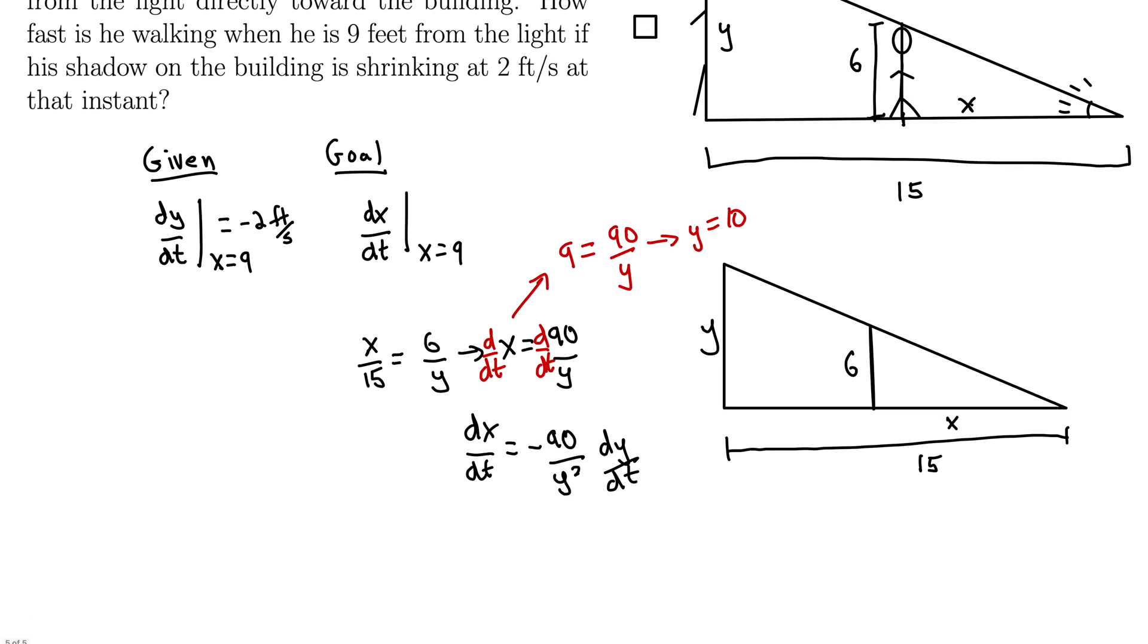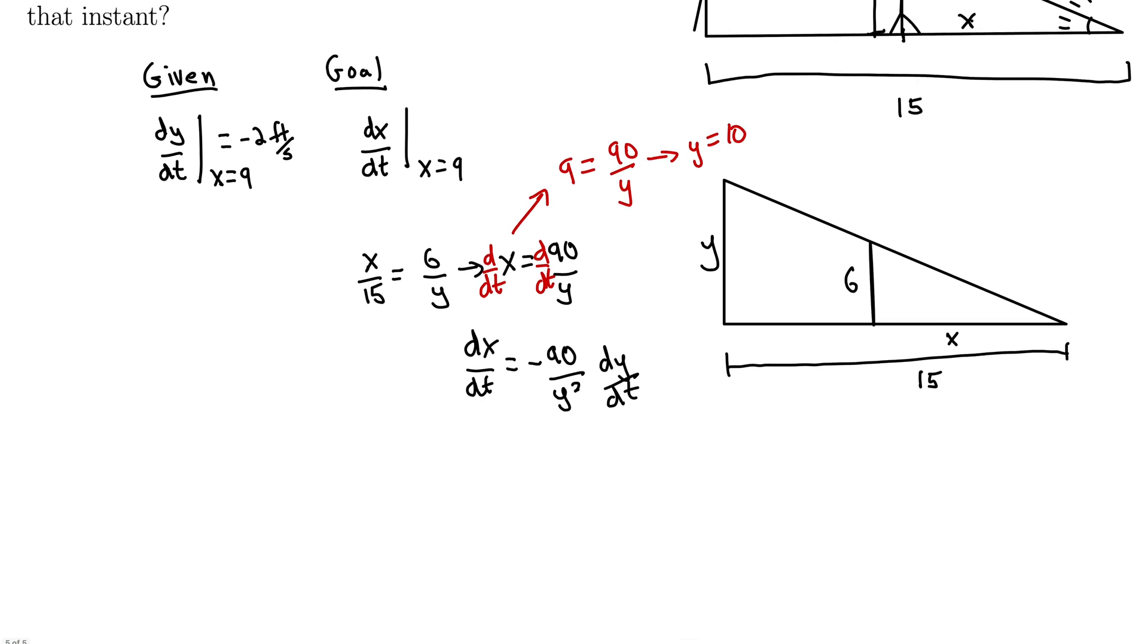So let's plug everything in and see where we can go here. We're looking for dx/dt. So plugging in, we have negative 90 over Y, which is 10, squared, which gives us a 100. And then dy/dt was given in the problem to be negative 2. So this all comes to 1.8.